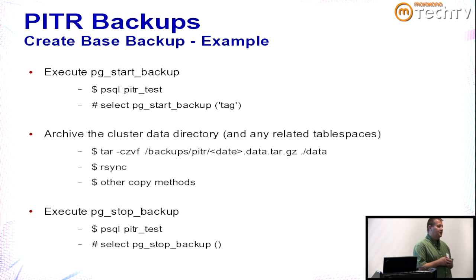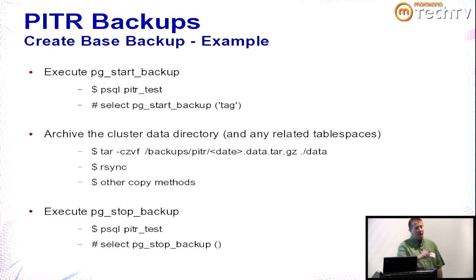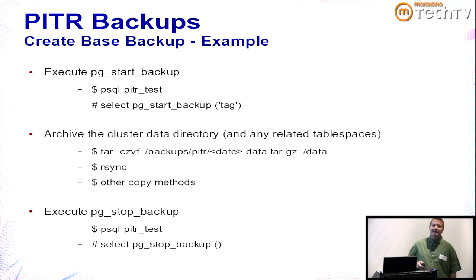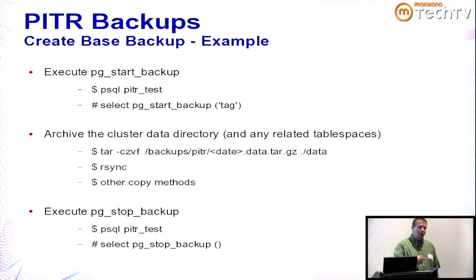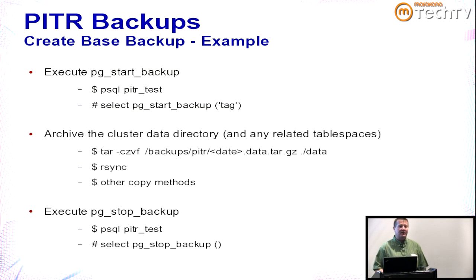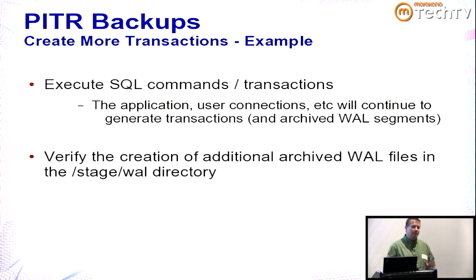If you have external tablespaces — say a filesystem at /pg_data with several tablespaces — back those up too. Any part of the filesystem with Postgres data needs to be backed up. You can use tar, rsync, scp — it doesn't matter, just back it up. When finished, connect to the database again and execute pg_stop_backup(), which takes no parameters. This tells the database where your filesystem copy started and ended. Then generate more transactions to create archived WAL on both sides of the backup for complete testing.